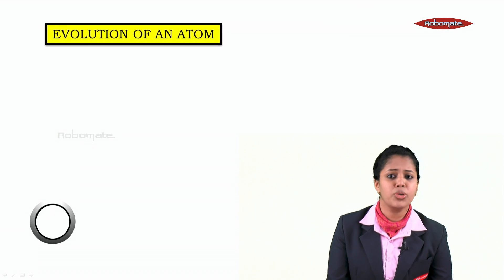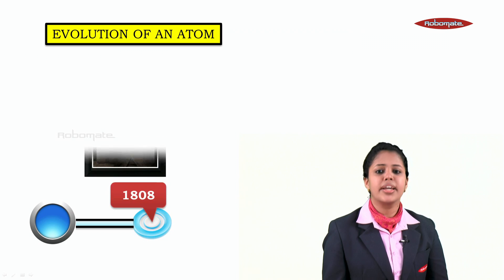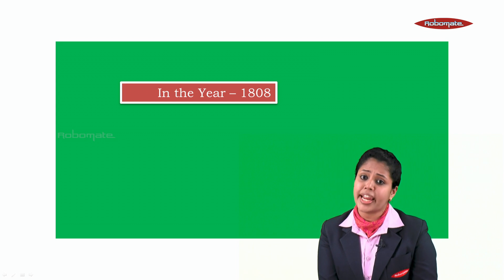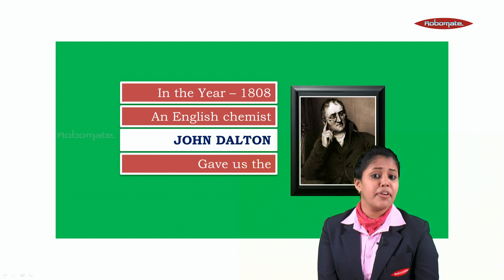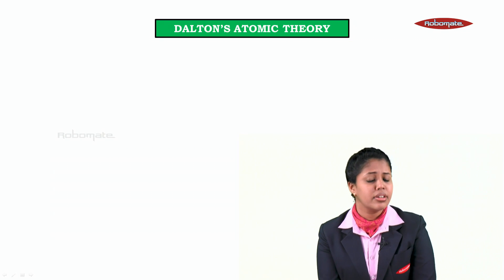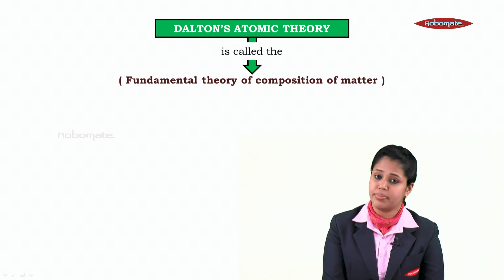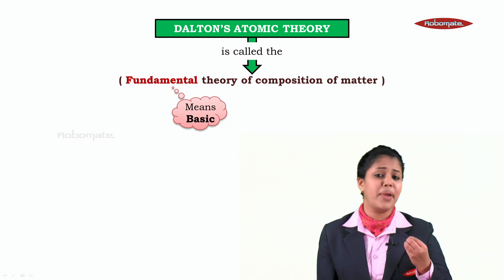Let's move on to the world of atom and look at the evolution of an atom. The first person in the evolution of an atom was in the year 1808, that is John Dalton. In the year 1808, an English chemist named John Dalton gave us Dalton's atomic theory. Dalton's atomic theory is called the fundamental theory of composition of matter. Fundamental means basic — his theory was the first and the basic theory.